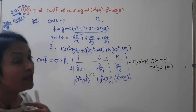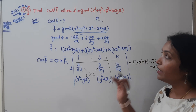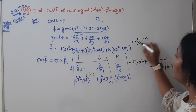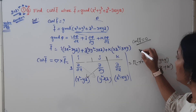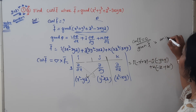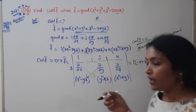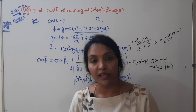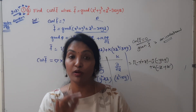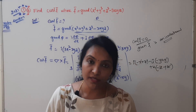Therefore, curl(F̄) = 0. The given curl F̄ is 0, which means the given F̄ is irrotational. If curl(F̄) = 0, the vector is irrotational. So the answer is compulsory — it is irrotational and solenoidal. Take care of everyone. All the best. Thanks for watching.